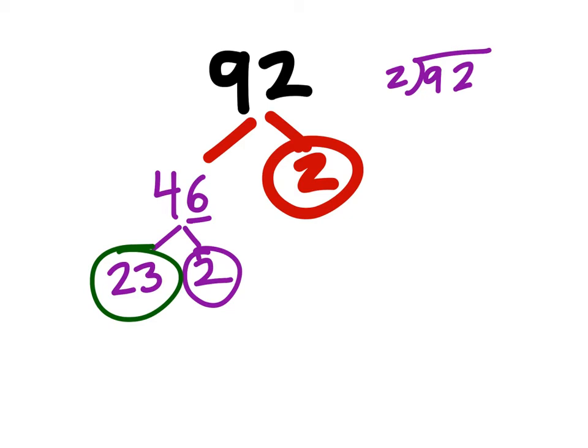So with all those cases we can work our way up to those other values but the prime factorization overall would be 23 times 2 times 2.